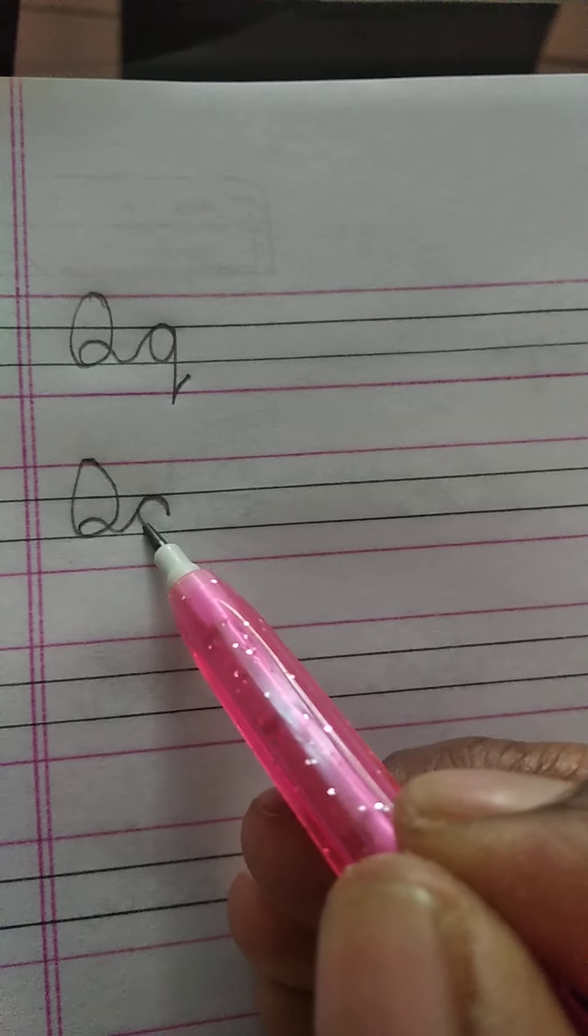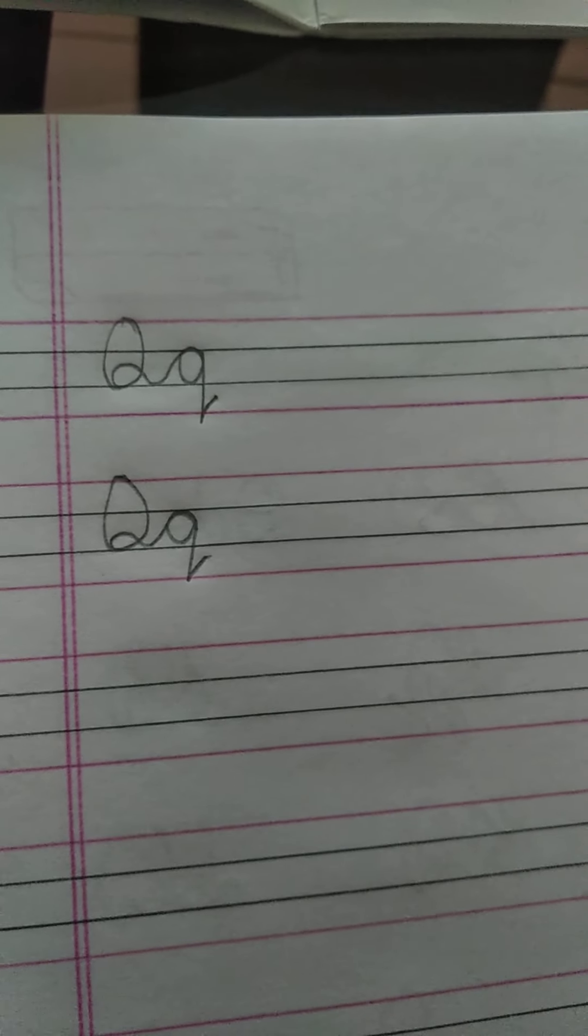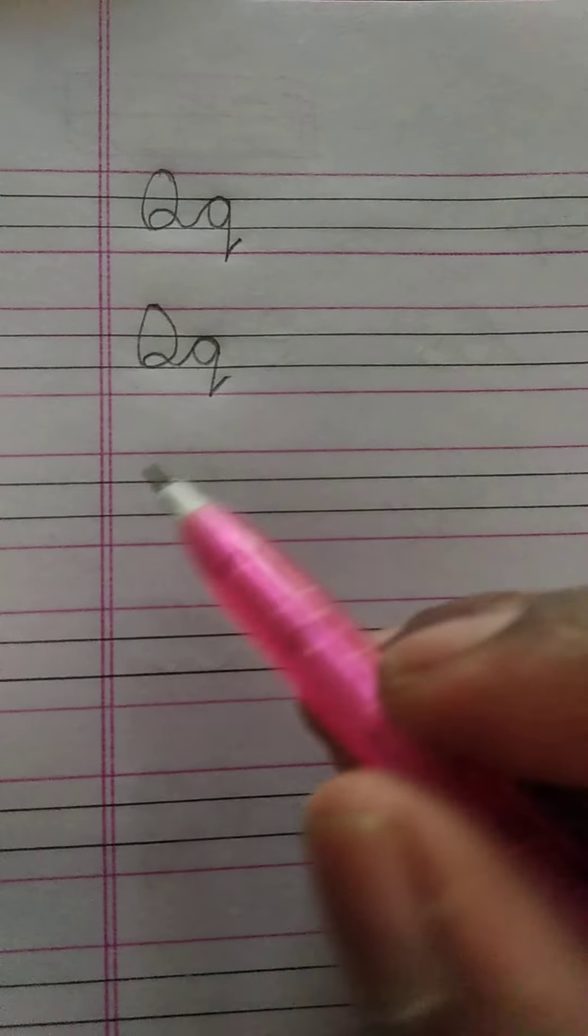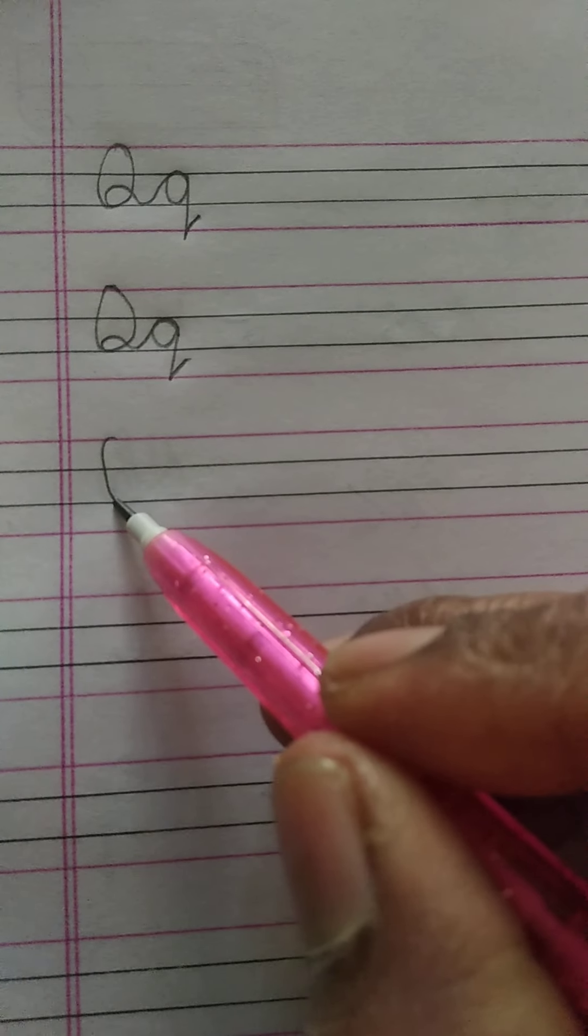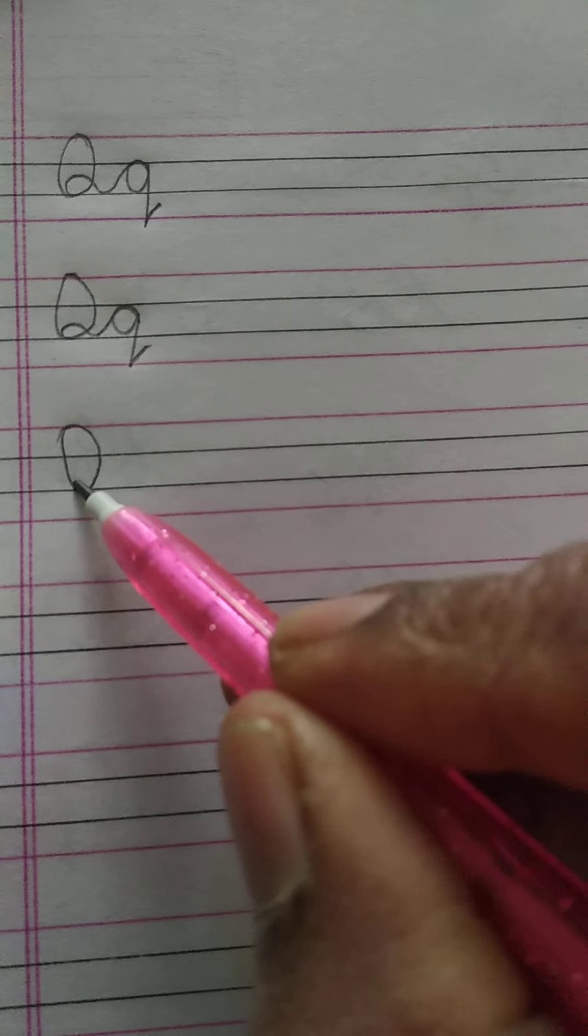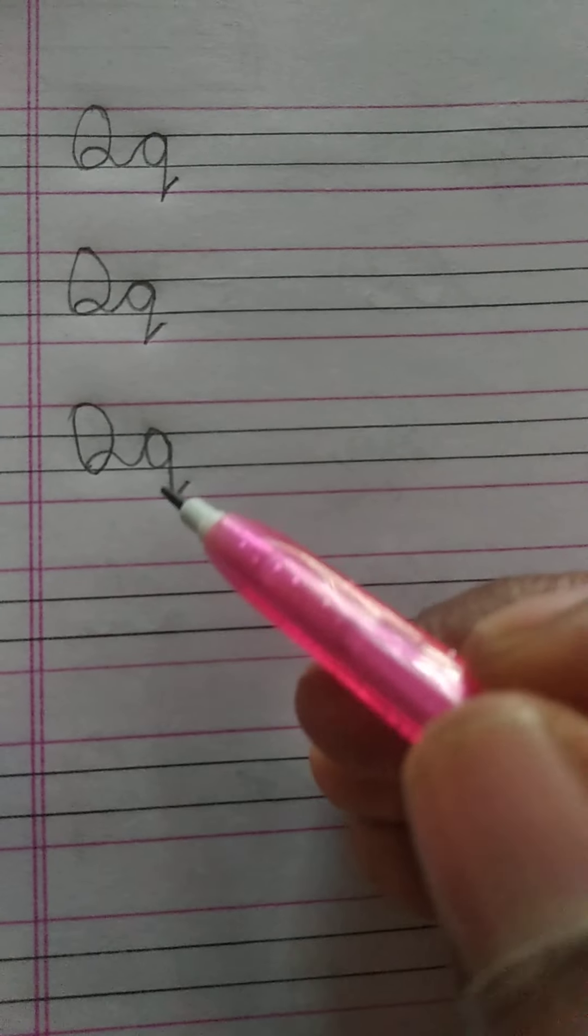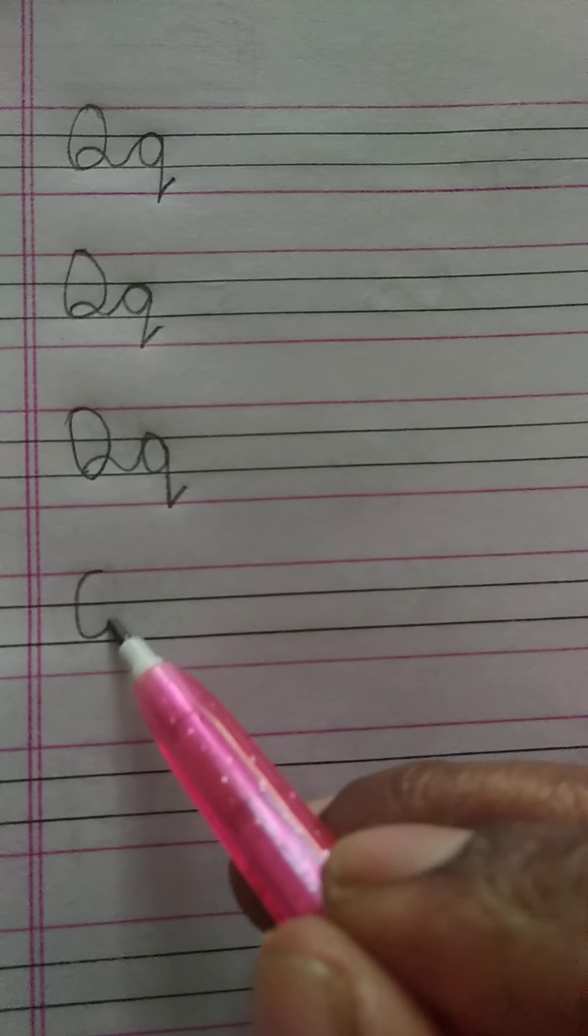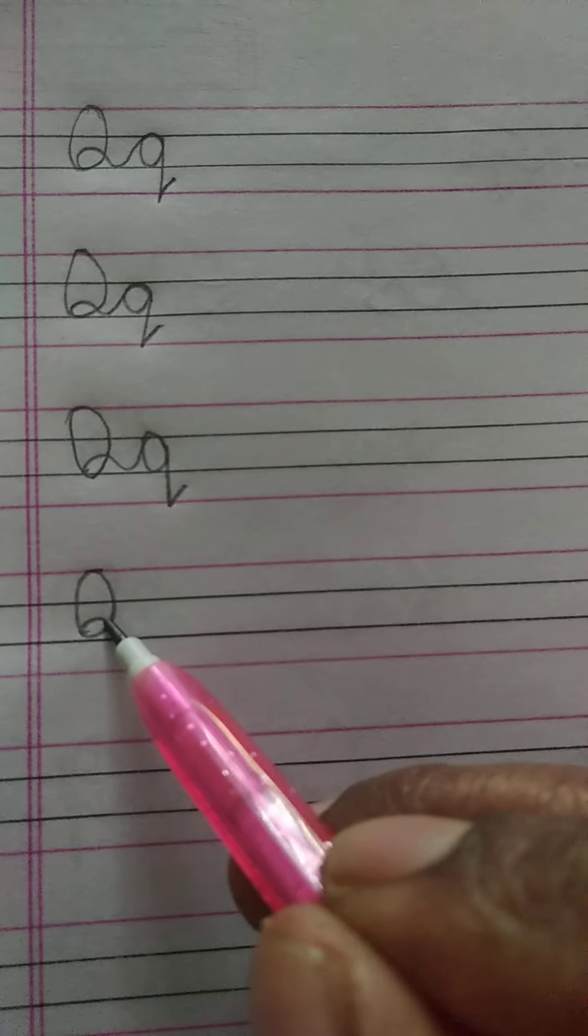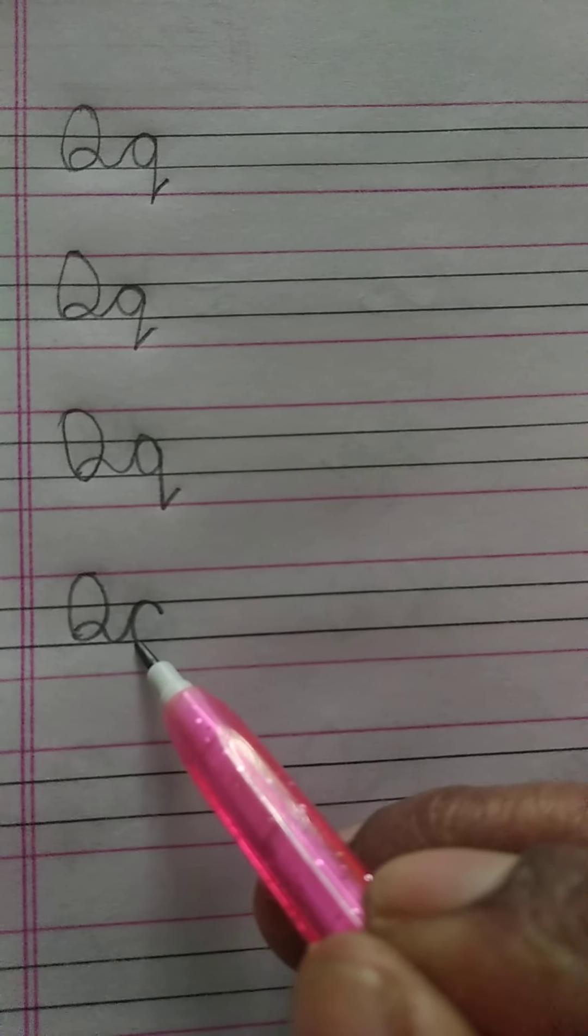Q, Q. Q, Q. Yeah, already you know Q. Simply we are learning how to write in the cursive model. Okay, next R.